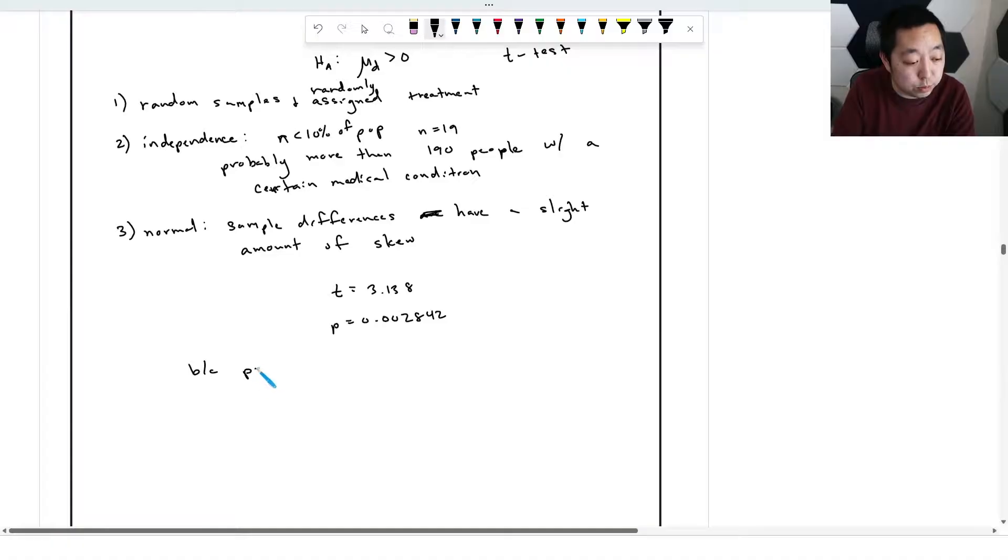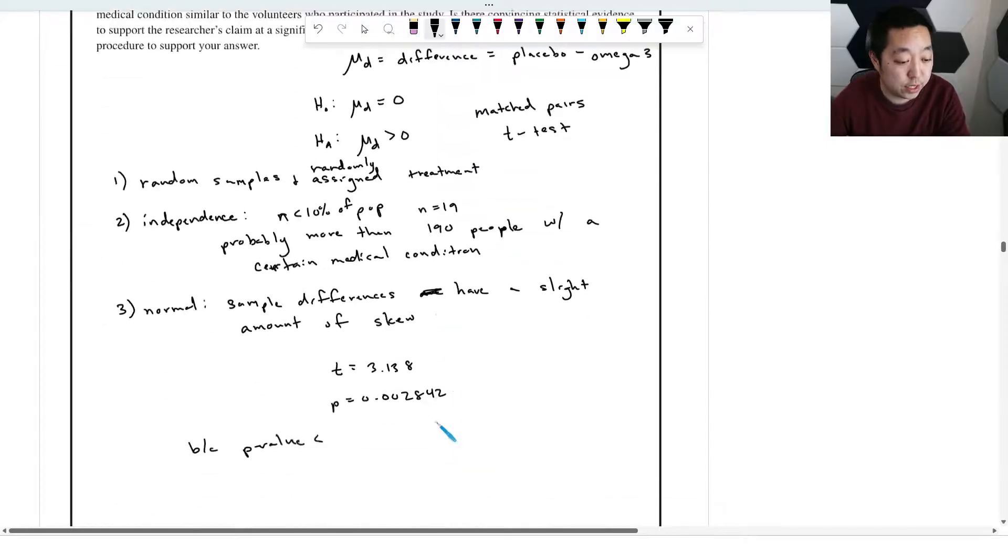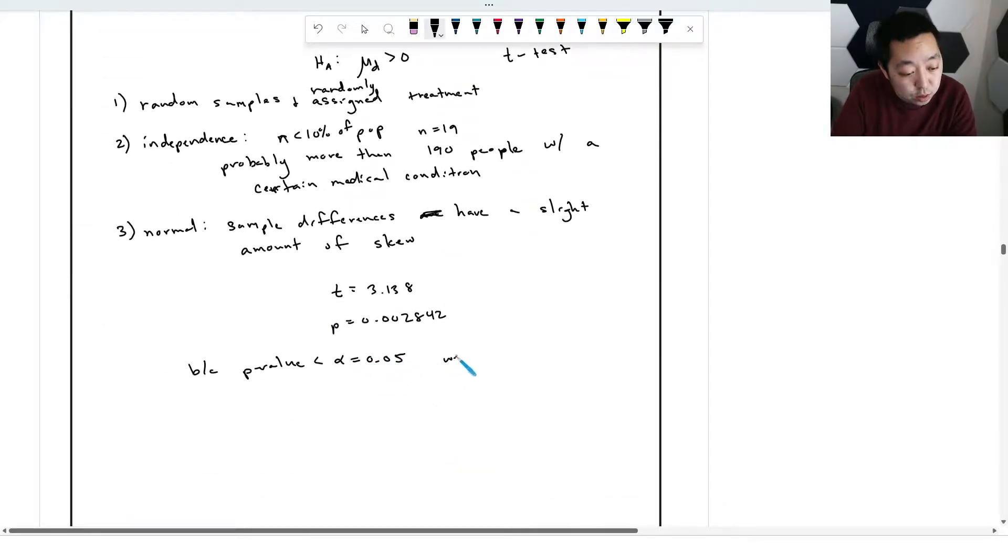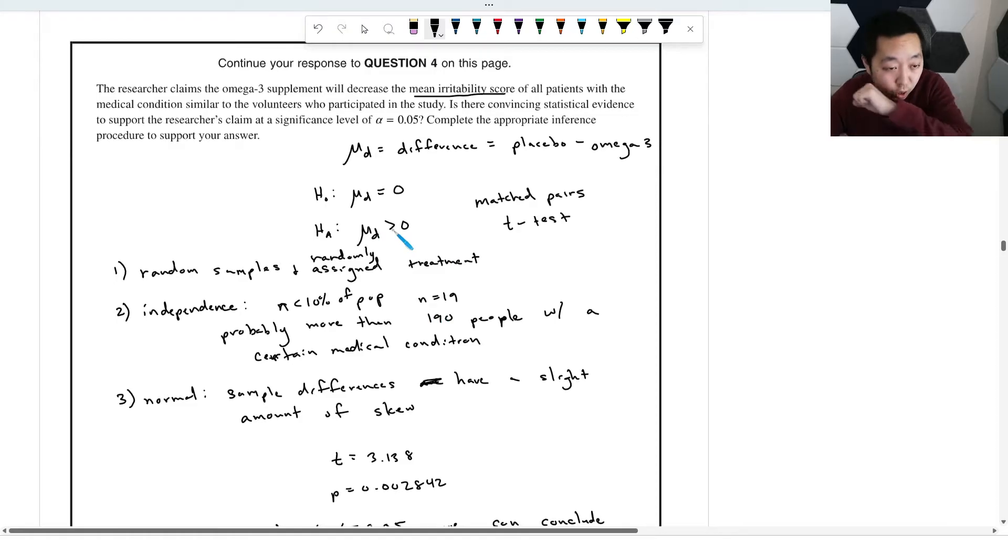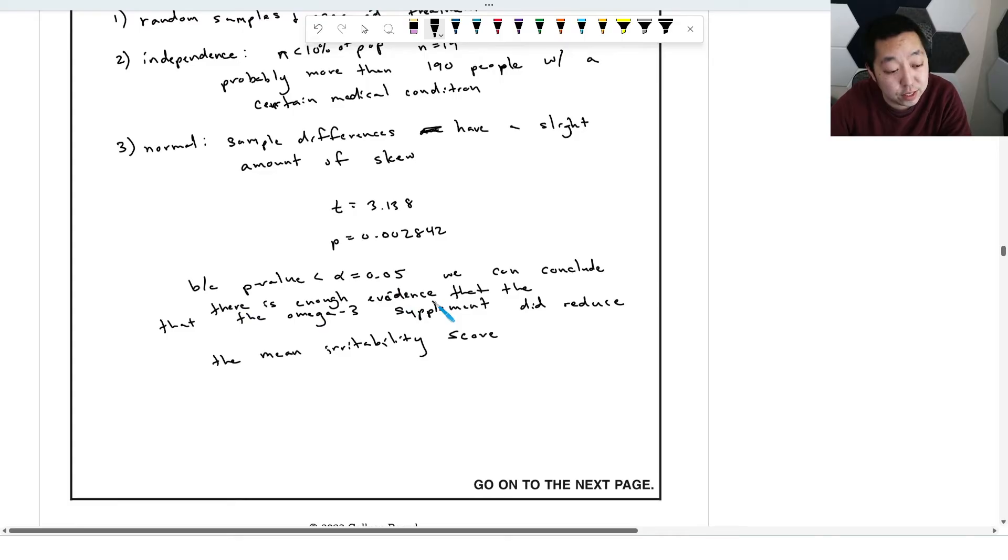And so because the p-value is less than alpha equal to 0.05, we can reject the null hypothesis. There's enough evidence that the omega-3 supplement did reduce the mean irritability score. You don't want to just say reject the null - it has to be in context. You want to say there's enough evidence, you don't want to say you know for sure.